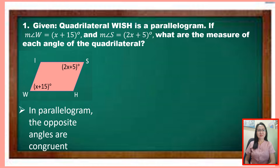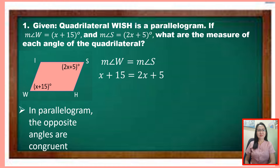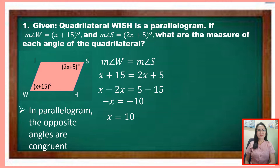We set the measure of angle W equal to the measure of angle S. By substitution, the measure of angle W is x plus 15 and the measure of angle S is 2x plus 5. By the addition property of equality, x minus 2x equals 5 minus 15, giving us negative x equals negative 10. Multiplying both sides by negative 1, the value of x is 10.